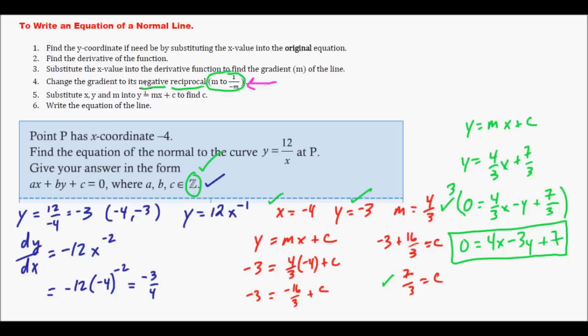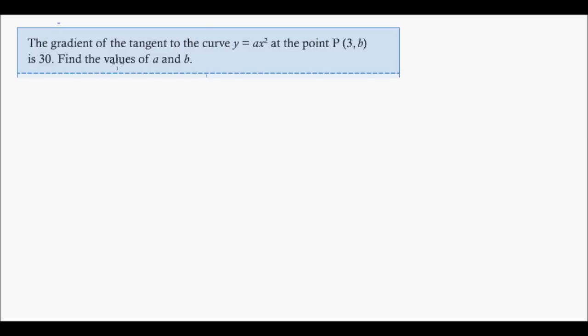Let's try one little tricky one, or maybe not so tricky, but just a little different at the end. This last one says the gradient of the tangent of the curve y equals ax squared at the point P is 3B. It's 30. So find the values of a and B. Kids get kind of confused on these when there's variables involved.